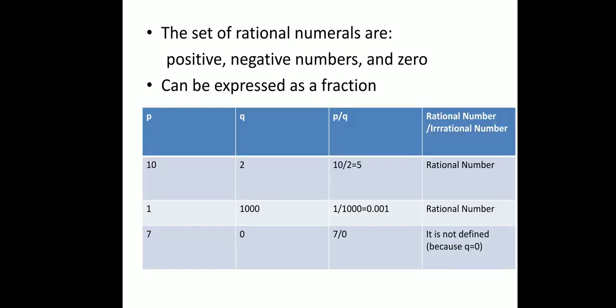The next important point to keep in mind is that the set of rational numbers includes positive numbers, negative numbers, and 0. As we studied in the definition of integers — positive natural numbers, negative natural numbers, including 0 — those form integers, and integers play an important role in rational numbers. Also, rational numbers can be expressed as a fraction; if a number can be written in the form of a ratio, it should be a rational number, provided both conditions are satisfied.